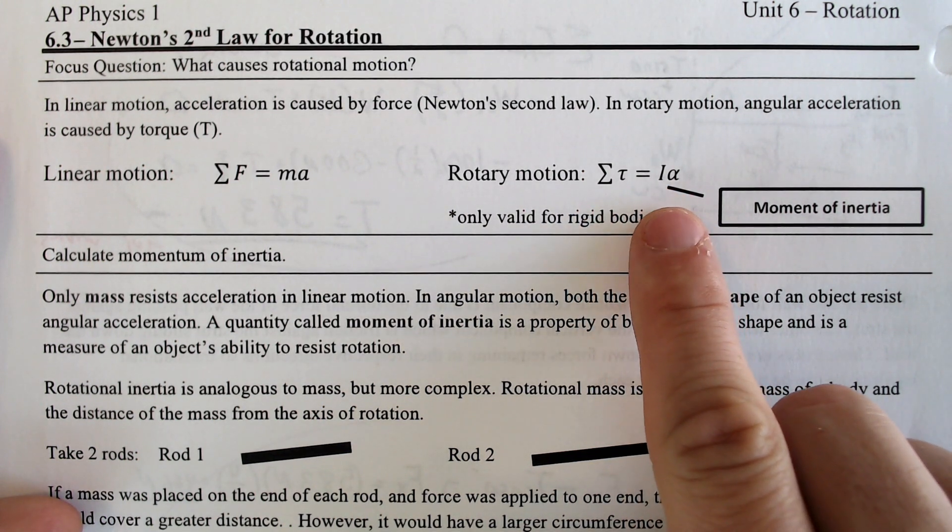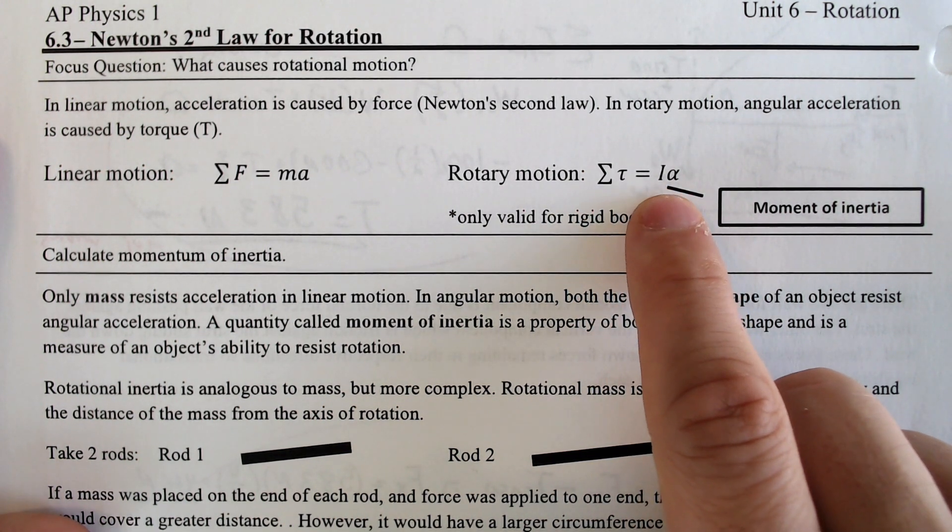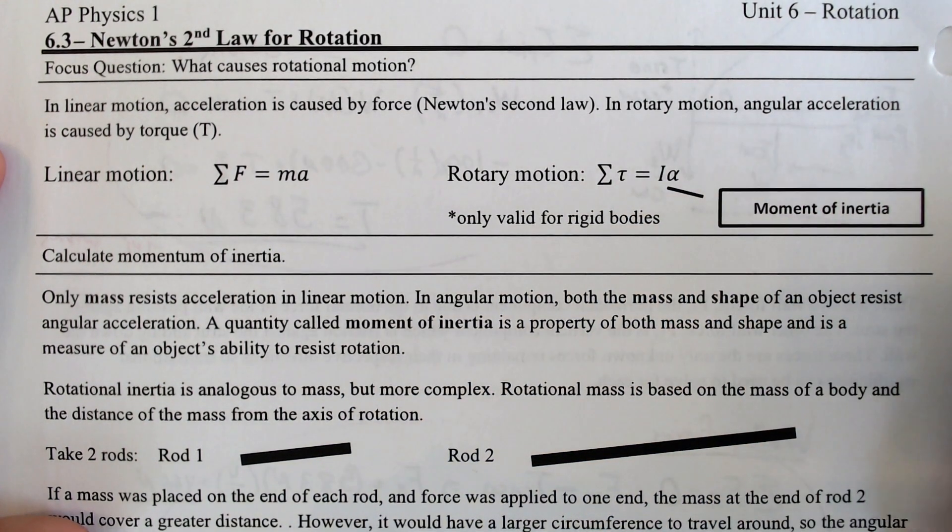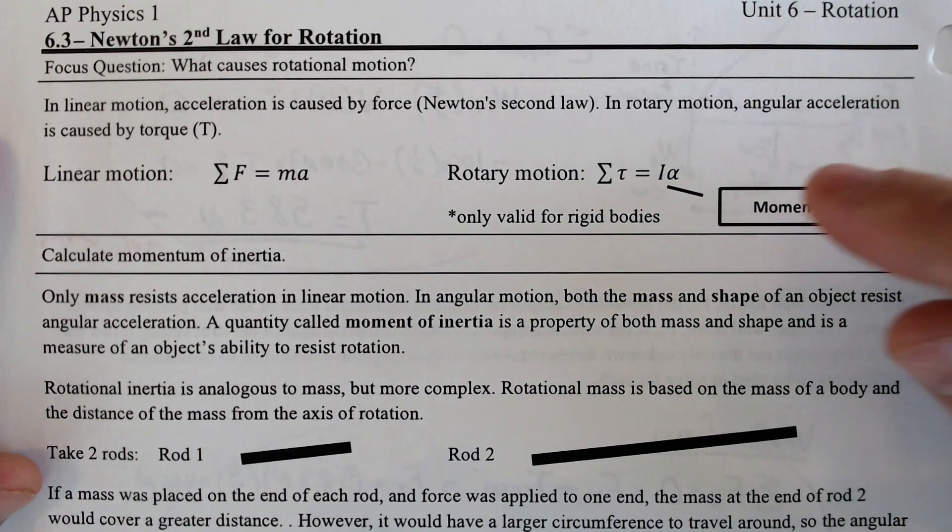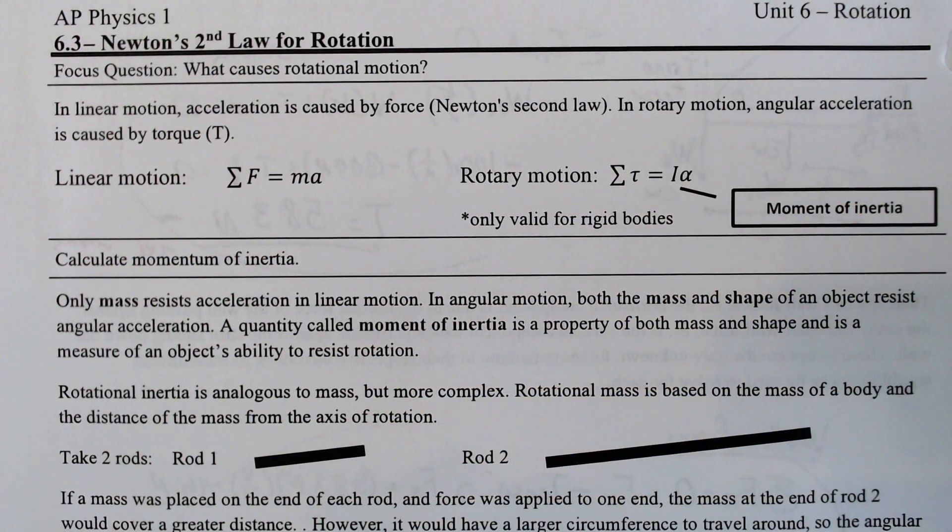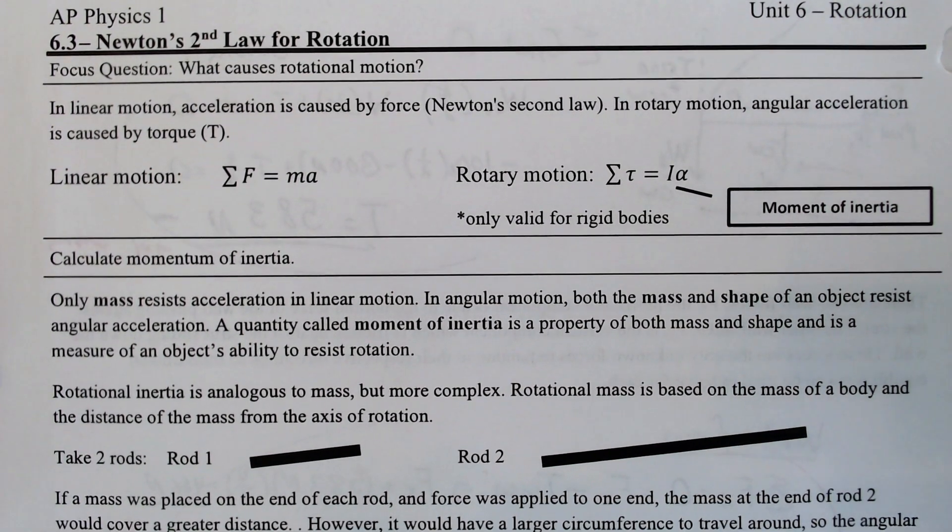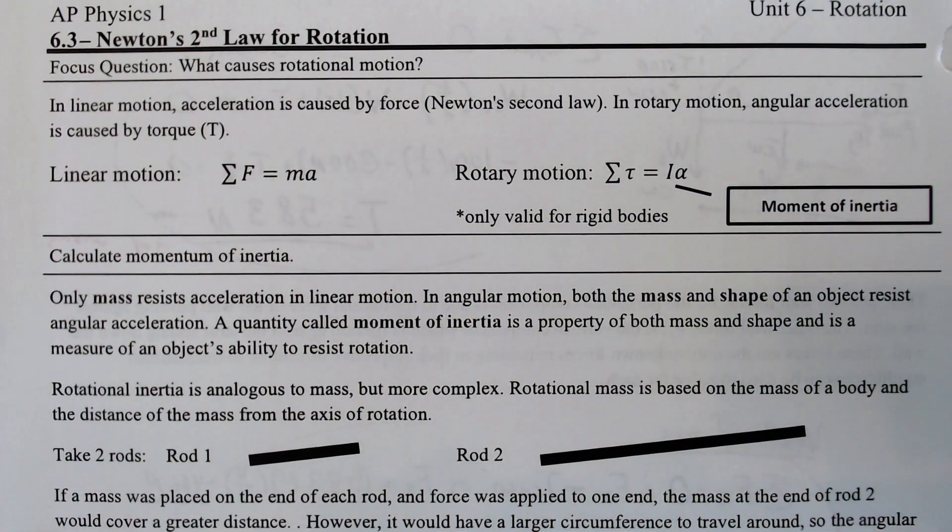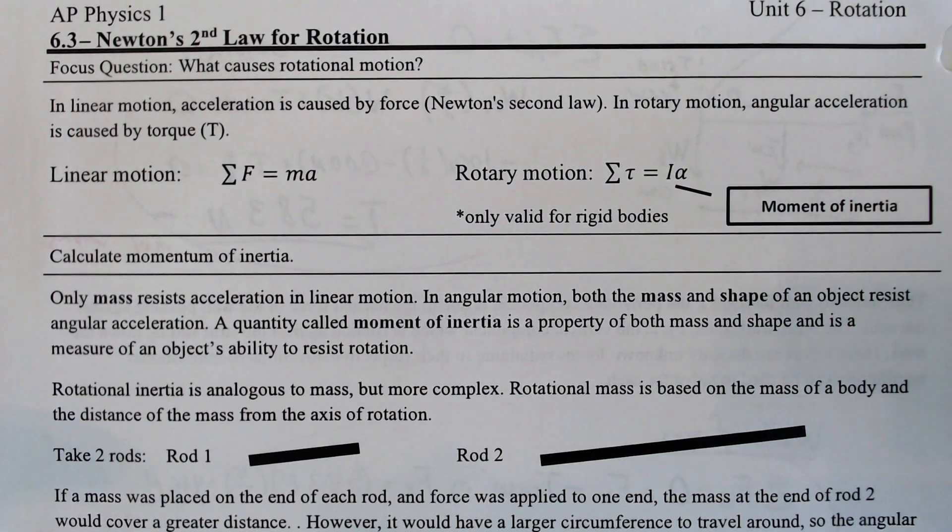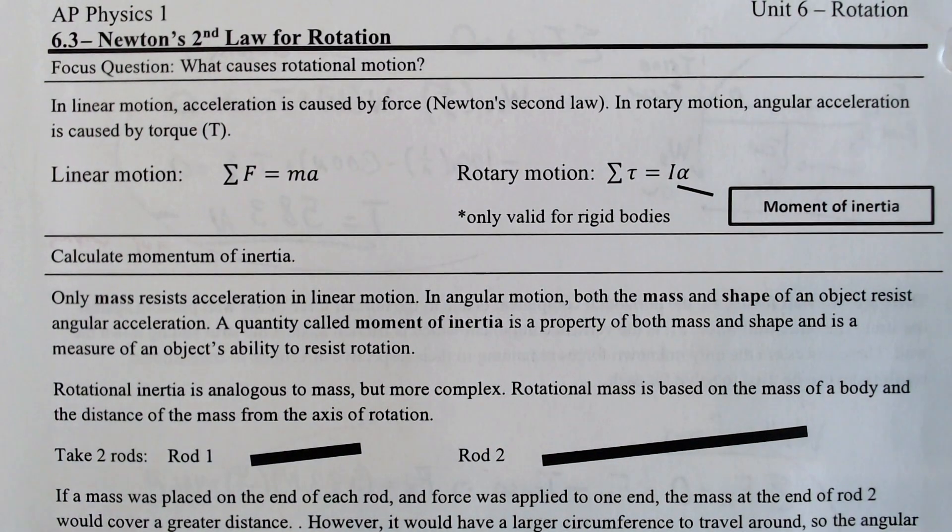It will involve this new symbol called I, the moment of inertia, and alpha, which is the angular acceleration. The reason we have to deal with it differently here is that it's not always a uniform mass. Not only that, but the amount of mass and where it's located will affect how fast the object will like to turn and how much force it will be needed to get it to turn.